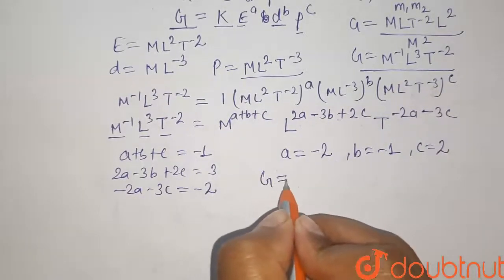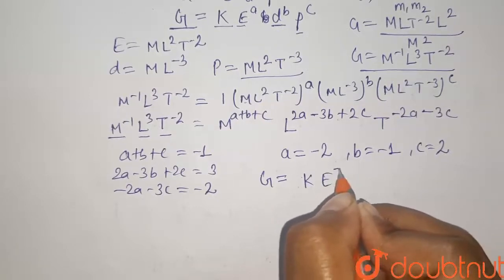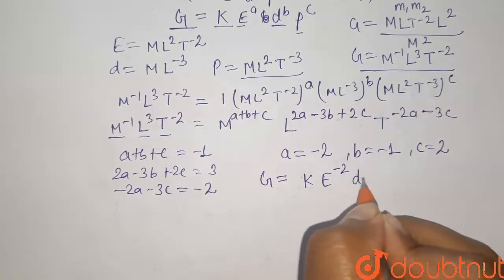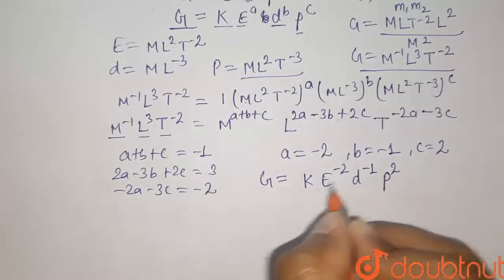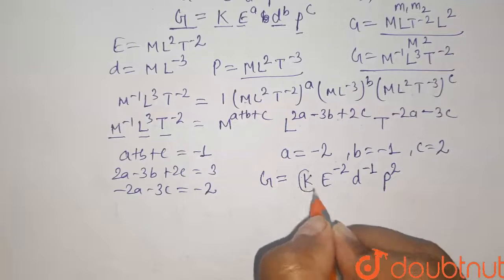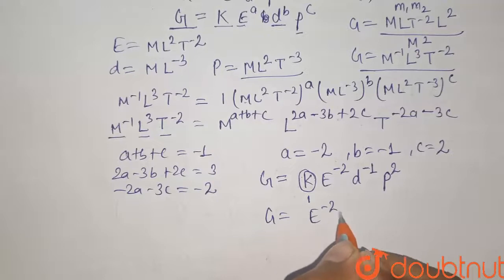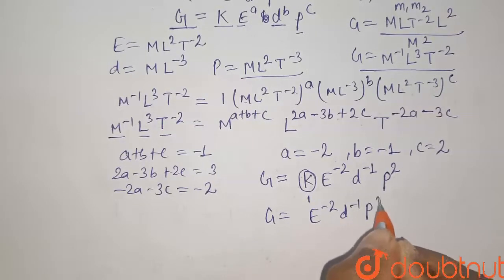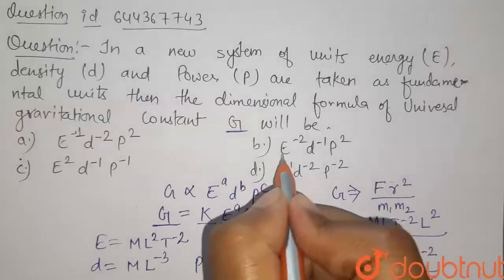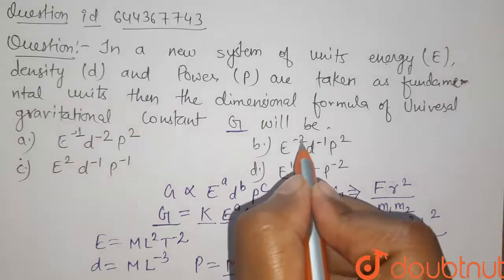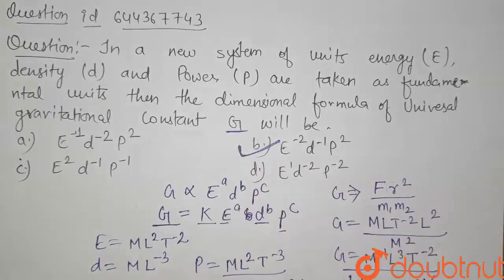Therefore the formula for G can be given by K into E to the power A that is minus 2, D to the power B that is minus 1, P to the power C that is 2. We can take this K as 1. So finally G will be equals to E to the power minus 2, D to the power minus 1, and P to the power 2. So this is our answer. We have option B, E to the power minus 2, D to the power minus 1, and P to the power 2. So it will be our correct answer for this question. Thank you.